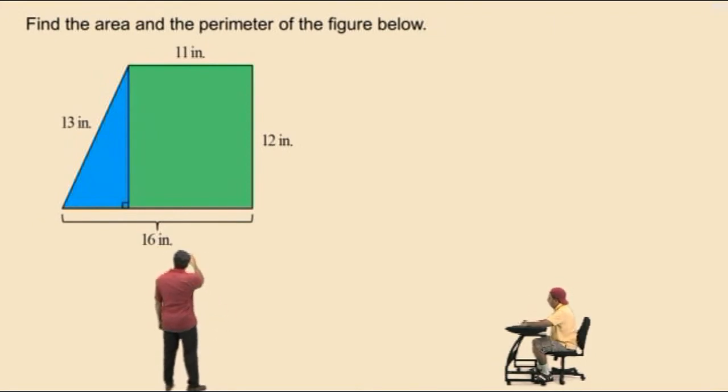Now, we have 11 inches up there. That means that's 11 inches right there. And now we have to find the missing side length, which is the length of the base of our right triangle. Now, if that's 16 inches and that's 11 inches, what's the missing side length, Charlie? 5 inches. 5 inches. That's right, because 11 inches plus 5 inches is 16 inches.